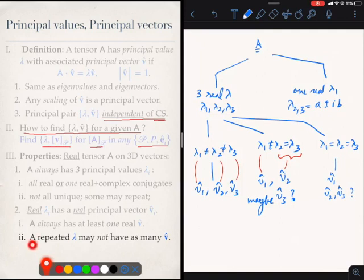That is what I say: a repeated lambda may not have as many v. If it is repeated twice, I may or may not have two associated principal vectors. Here repeated thrice, I may or may not have three principal vectors.